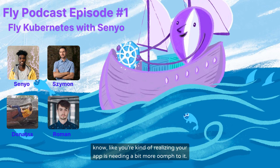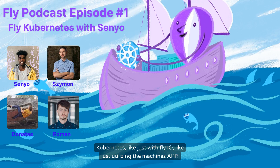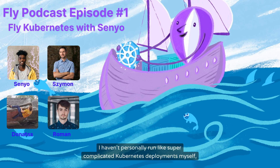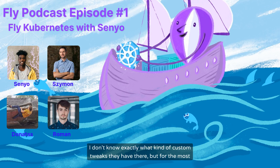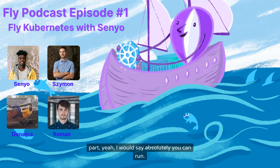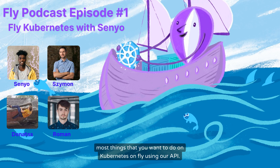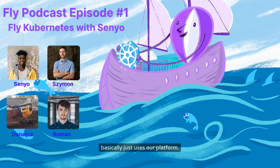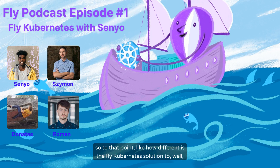If you started fresh and realized your app needed more power, do you think you can achieve the same things with Fly.io using just the Machines API? I think mostly yes. I haven't personally run super complicated Kubernetes deployments myself, so for very large-scale deployments I can't speak to all the custom tweaks. But for the most part, you can absolutely run most things you want to do on Fly using our API.